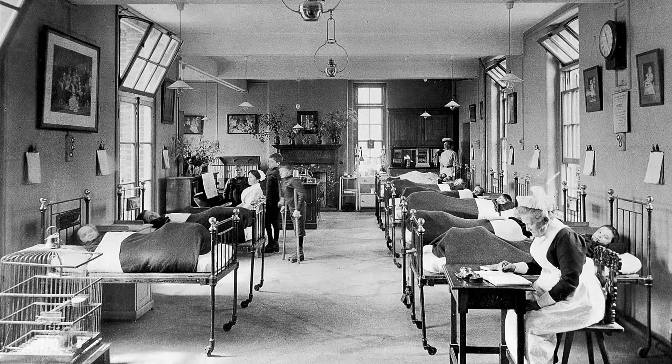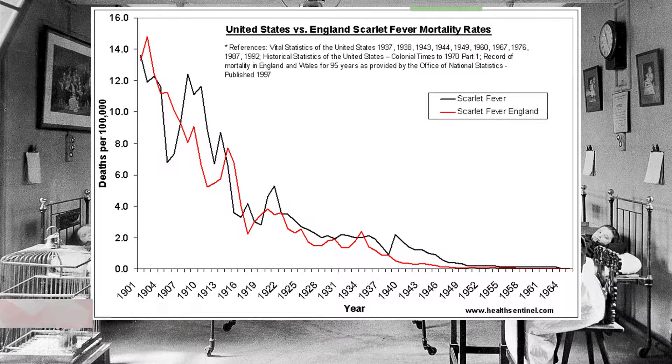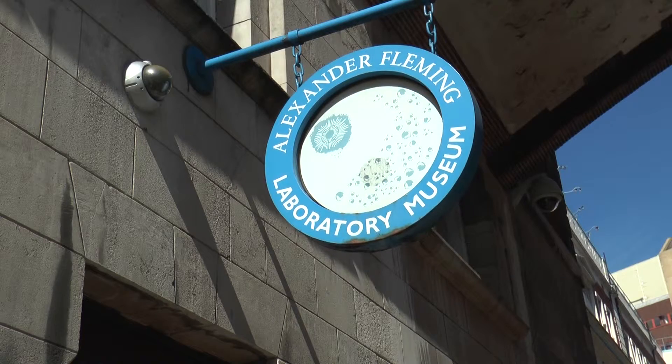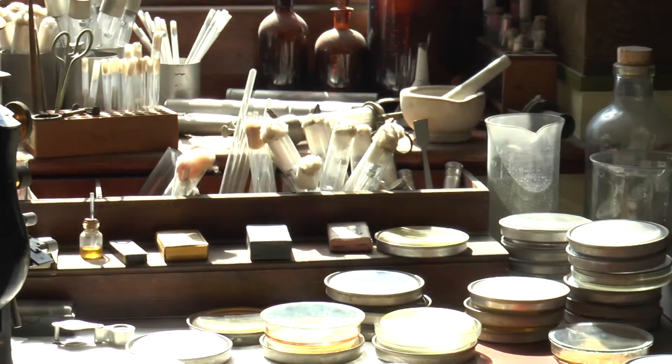These mortality rates dropped significantly by the start of the First World War, with approximately eight deaths per 100,000 people. Yet deaths were still a common occurrence, and it wasn't until after the 1950s that they were actually eradicated. This was due to the mass production of penicillin, discovered by Alexander Fleming in 1928. By 1944–45, there was enough penicillin for use on the battlefields, but it wasn't until the end of the war that it was available for civilian use on a wide scale. In the United States it was available from March 1945, and in Britain from July 1946.